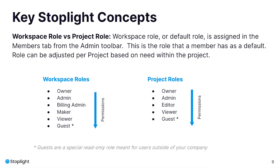Now that we've reviewed how Stoplight can enhance your API development process, let's take a minute to review some key concepts. The first concept to understand is roles within Stoplight. While workspace roles are focused on access for managing settings and changes at the workspace level — set in your members tab — projects and team roles are focused on a level of access within an individual project. I highly recommend becoming familiar with these roles by visiting our documentation pages.